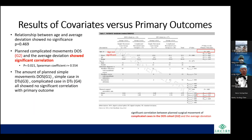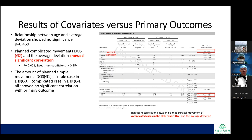Regarding covariates, the relationship between age and average deviation showed no significance (p = 0.469). The planned complicated movements of the splint group (group 2) showed significant correlation with average deviation (p = 0.021, Spearman coefficient r = 0.554). However, the amount of planned movement for simple DOS cases and all DTS cases showed no significant correlation with primary outcomes.